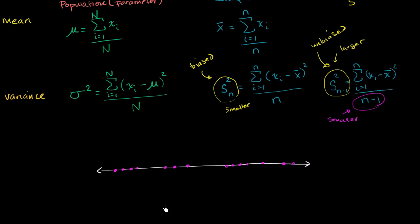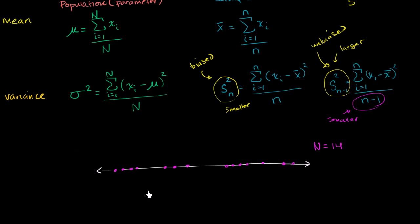Now let's say I take a sample of this. In this case, my big N would be 14 — there are 14 data points in my population. Let's say my sample size is lowercase n equals 3. Before I even think about sampling, let's think about roughly where the mean of this population would sit. The way I drew it, the mean might sit someplace roughly right over here — that's the true population mean, the parameter.